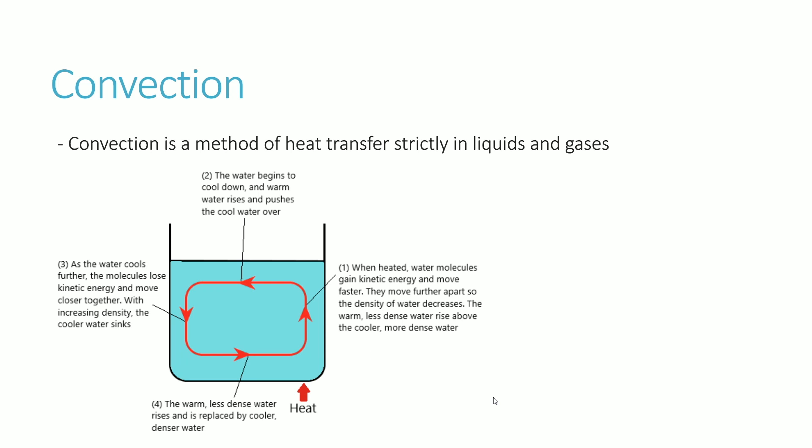Convection is a method of heat transfer that occurs strictly in liquids and gases — solids are out of the picture. When you heat up a liquid or gas, the water molecules gain kinetic energy, meaning they move faster, and as a result they move further apart, so the density of the water decreases. The warm, or less dense, water starts to rise above the cooler and more dense water.